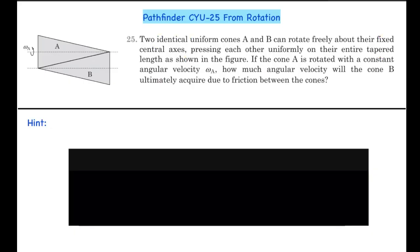Hello guys, here we have question number 25 from the 'Check Your Understanding' exercise of the chapter on Rotation from Pathfinder. Two identical uniform cones A and B can rotate freely about the fixed central axis, pressing against each other uniformly in their entire tapered lengths as shown in the figure. If cone A is rotated with a constant angular velocity omega_a, how much angular velocity will cone B ultimately acquire due to the friction between the cones?